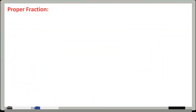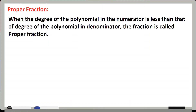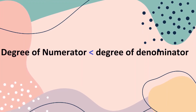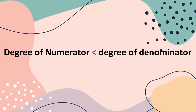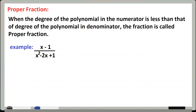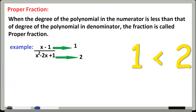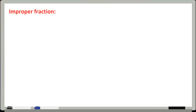Next important definition is of proper fraction. When the degree of polynomial in the numerator is less than the degree of polynomial in the denominator, the fraction is called a proper fraction. Matlab numerator mein maujood polynomial ki degree kam honi chahiye denominator se. For example, (x - 1) / (x² - 2x + 1) — yahan numerator ki degree 1 hai aur denominator ki degree 2 hai, denominator mein degree zyada hai, isliye yeh proper fraction hai.